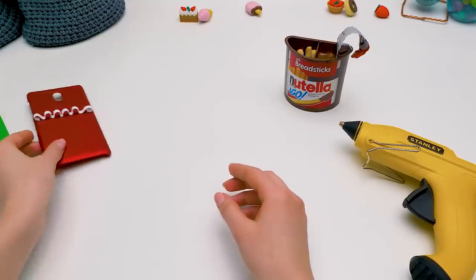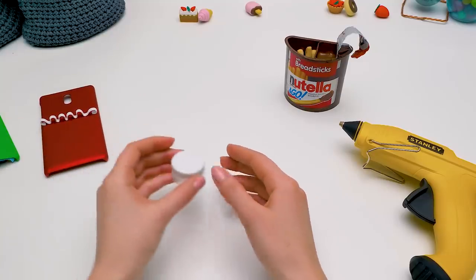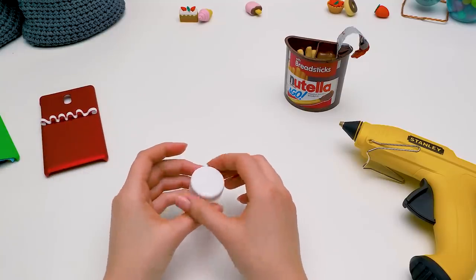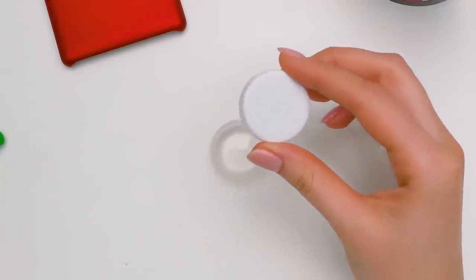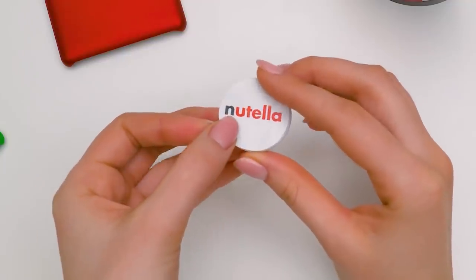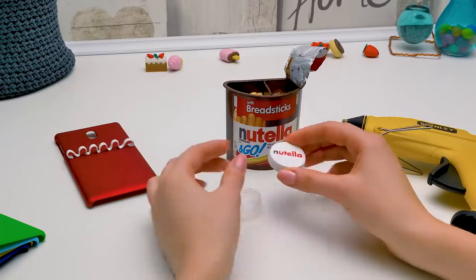When you're out of cookies, you can use these loops to hold pencils. Now we need to make a small Nutella jar. Something like this. I painted the lid white. And I also made this sticker with the logo to make it even prettier.